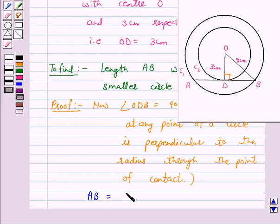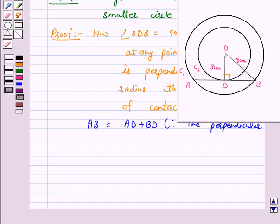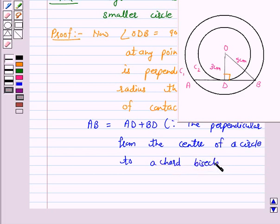The perpendicular from the center of a circle to a chord bisects the chord. So AD equals BD, or we can say AB is equal to twice BD.